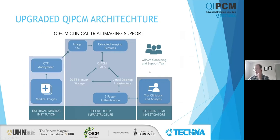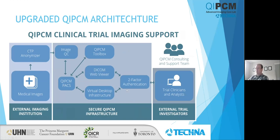So this was our original system diagram, and now it looks more like this. The left side of the diagram hasn't changed — users are still anonymizing their images, sending them through for image QC and into our PACS. But on the right side, we now have two pathways for users to access their images. They can still access virtual desktops — a lot of users still need this for standalone applications — but a lot of them can now use the DICOM Web Viewer.